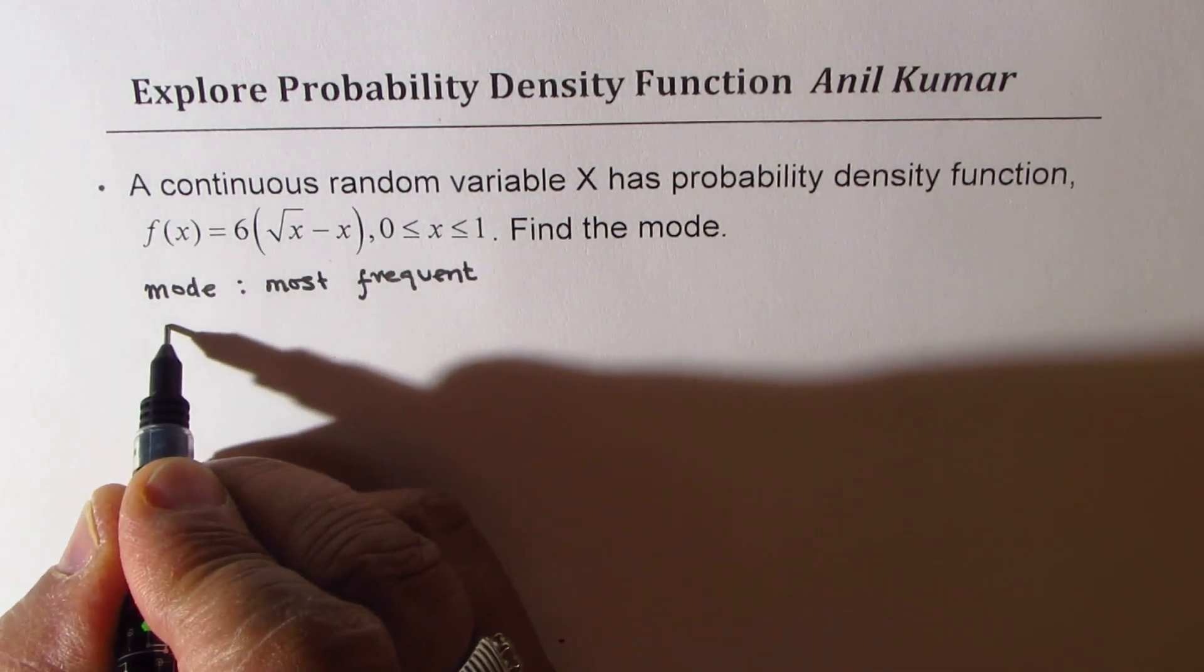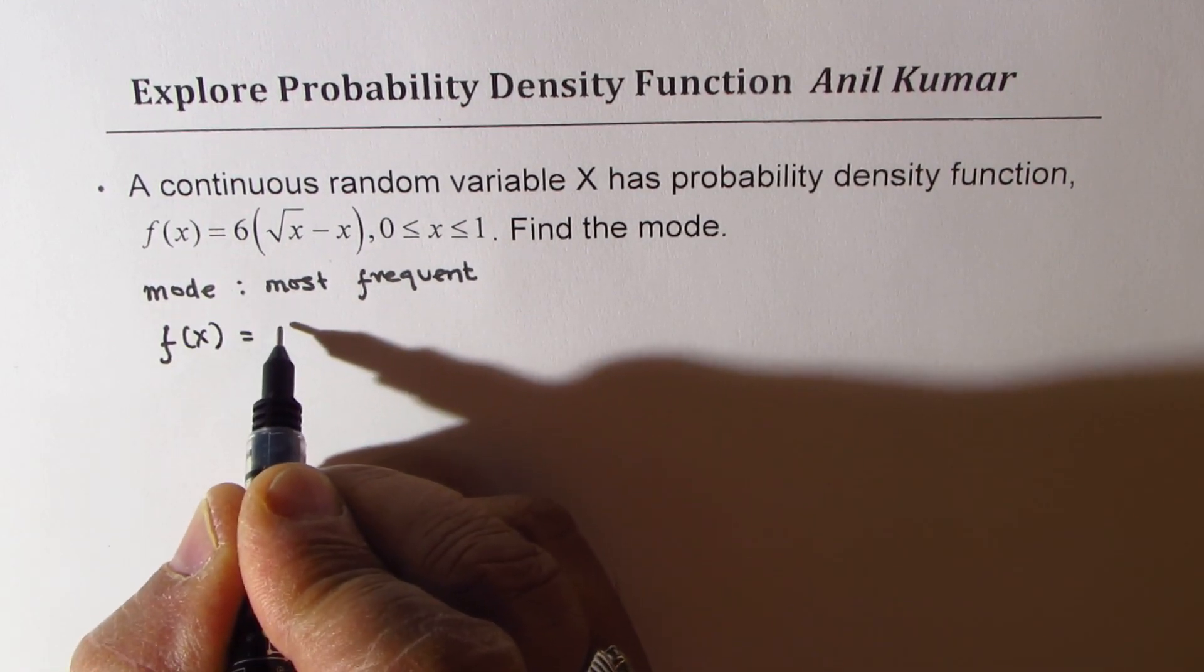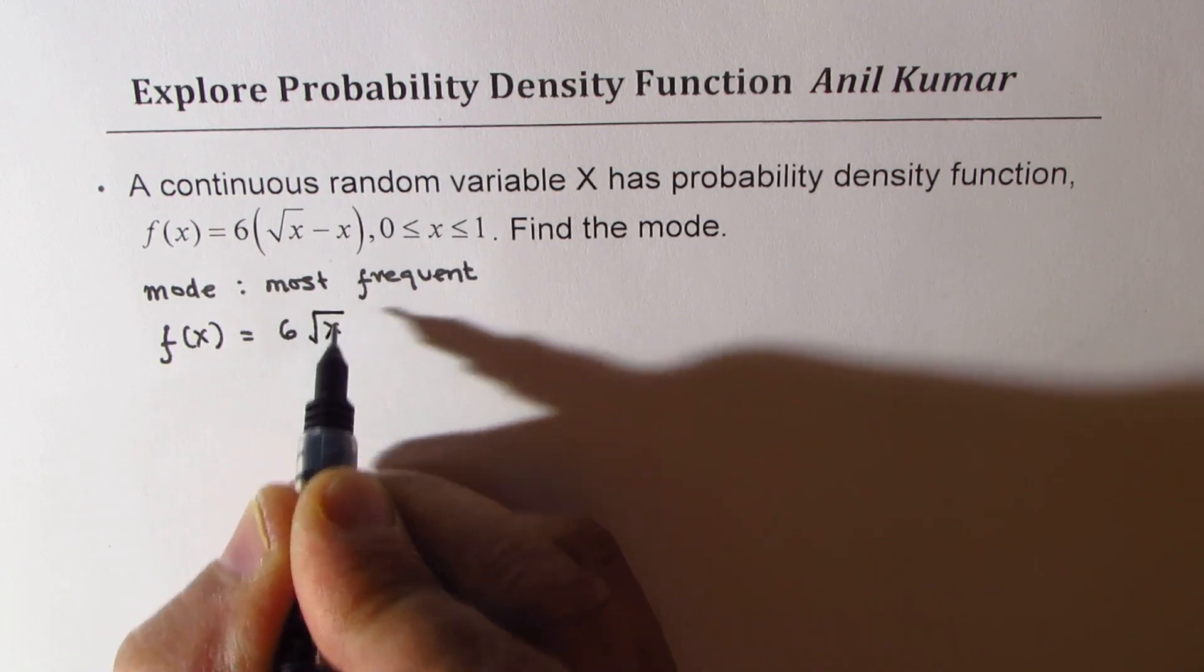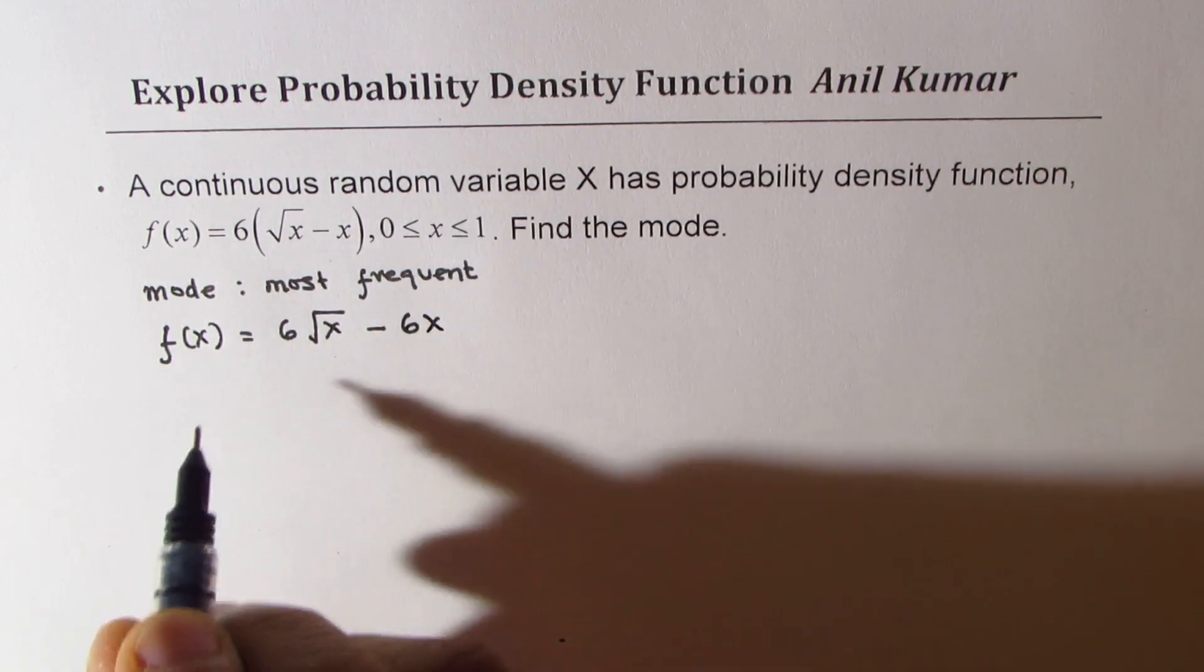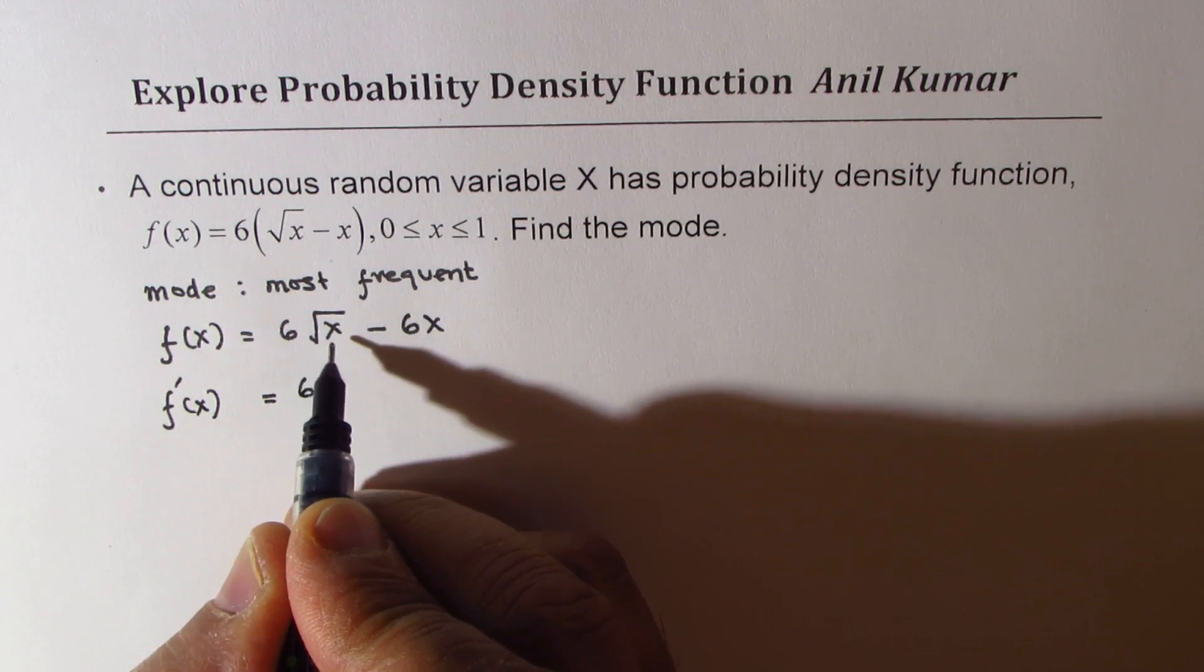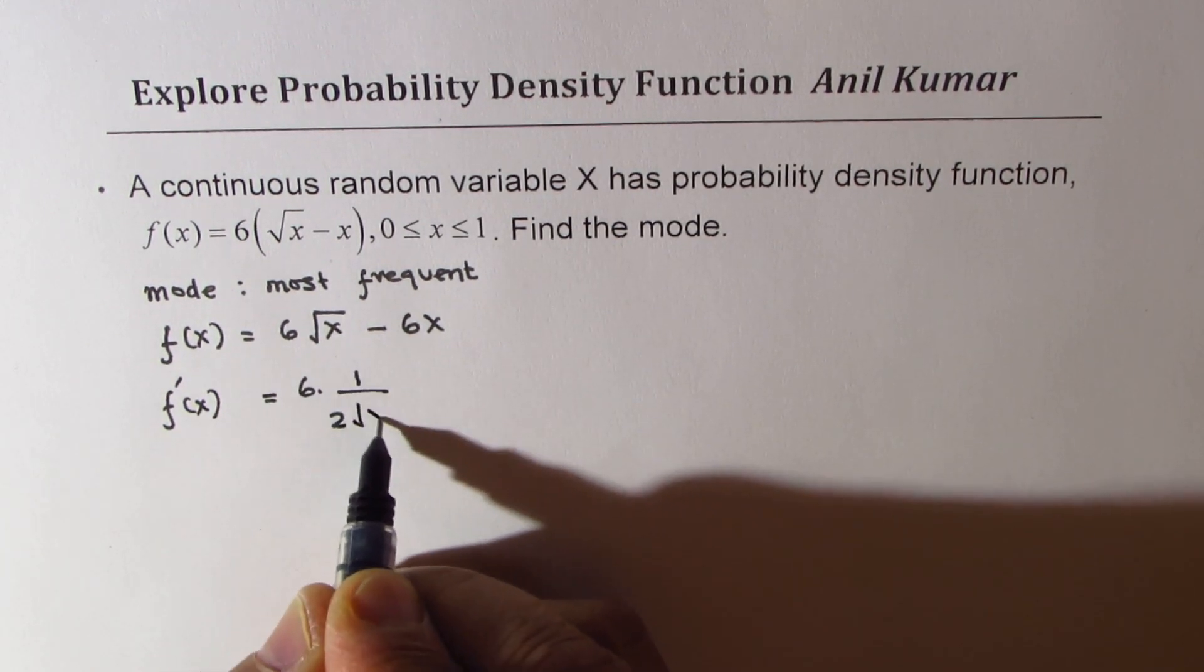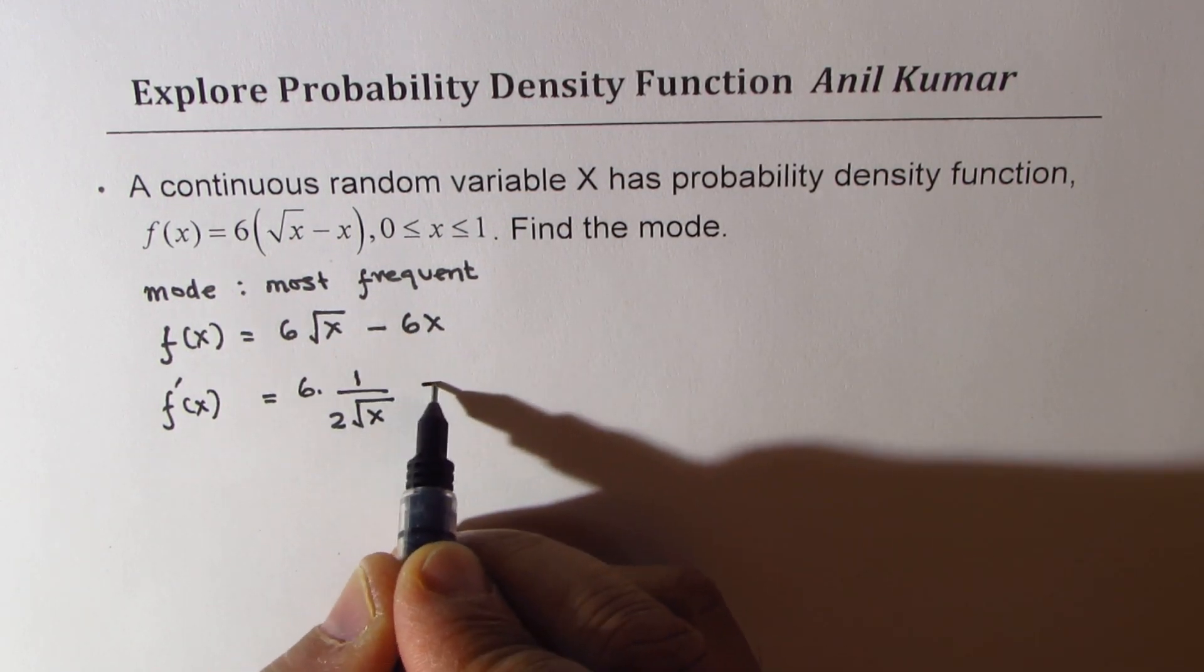To find mode, we will differentiate the given function, which is 6 times square root x minus 6x. If you differentiate this function, you get 6 times square root x derivative which is 1 over 2 square root x, and the derivative of minus 6x is minus 6.